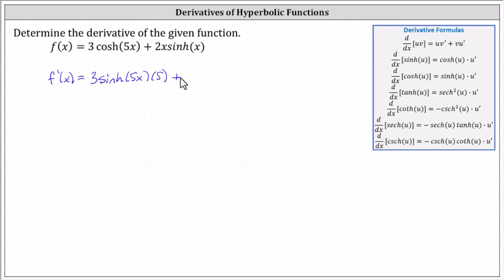Then plus — to differentiate two x times hyperbolic sine x, we need to apply the product rule of differentiation. Looking at the notes on the right, the derivative of u times v with respect to x equals u times v prime plus v times u prime, which indicates the derivative is equal to the first function times the derivative of the second function, plus the second function times the derivative of the first function.